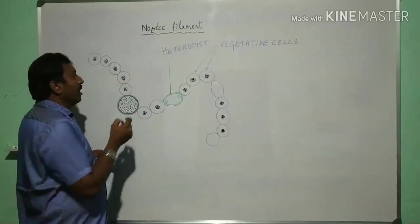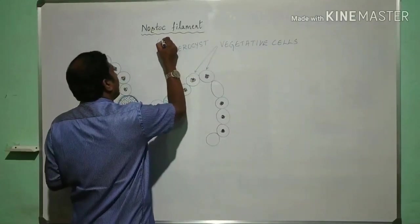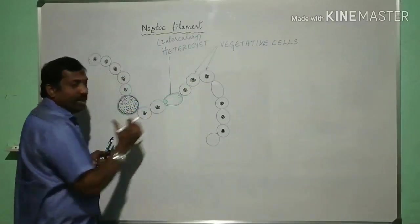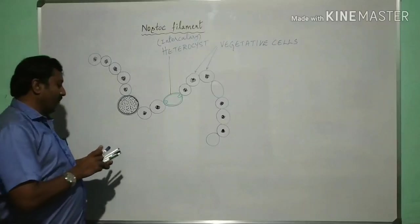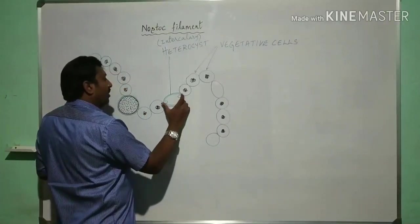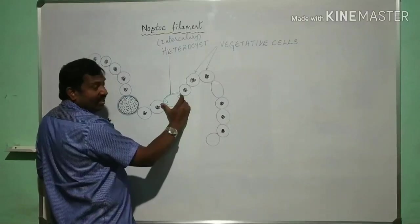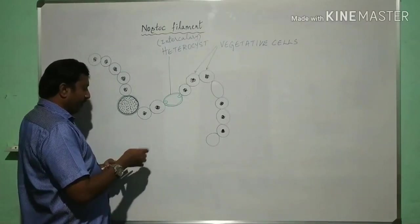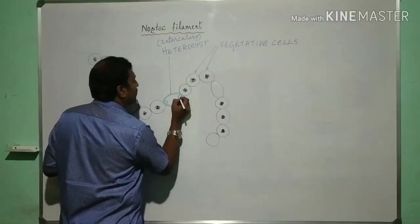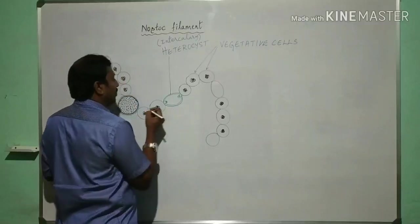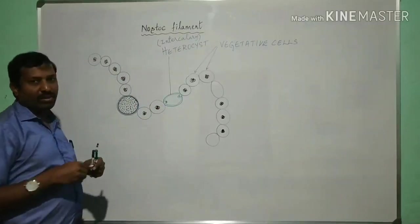And that too intercalary heterocyst, because they are present in between the vegetative cells. Where there is an attachment at both the ends terminal regions to the vegetative cells nearby, there is transport of some substances through a small pore called terminal pores are present.